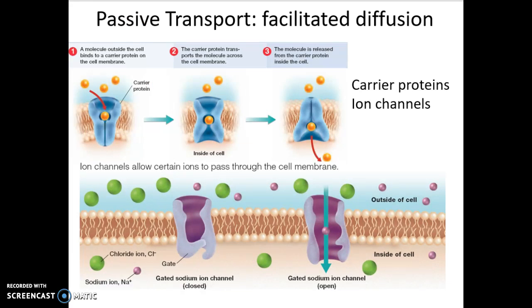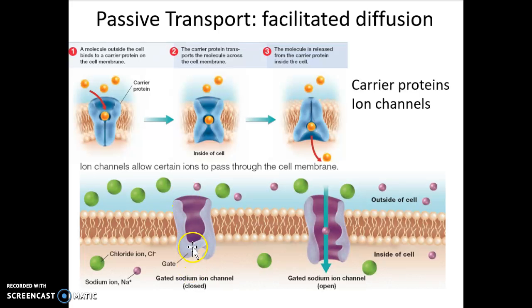Earlier I alluded to a poor model of how water gets in. There needs to be a membrane protein to allow any substance to get across the lipid bilayer. Here we have an integral protein that is closed — a protein that can open and close is called a gated channel, and the part that opens and closes is called the gate.